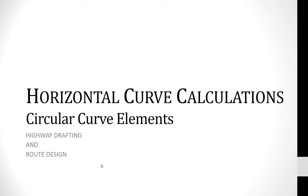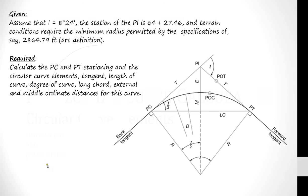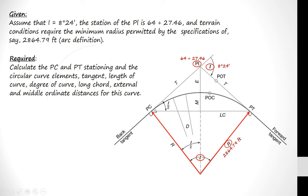The following is on horizontal curve calculations — the circular curve elements. We're given this scenario: an intersection angle of 8 degrees 24 minutes, where the back tangent and forward tangent give us that intersection angle. The PI station is 64 plus 27.46, and terrain conditions require a minimum radius of 2,864.79 feet based on an arc definition. We need to find the PC station and PT station, which requires calculating the tangent length and the length of curve.